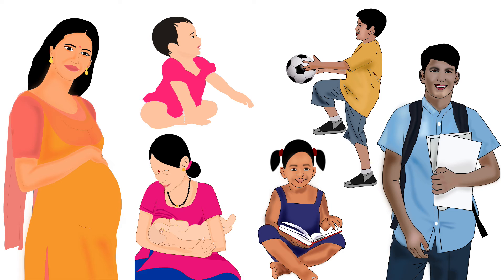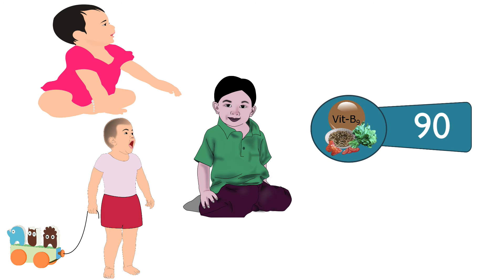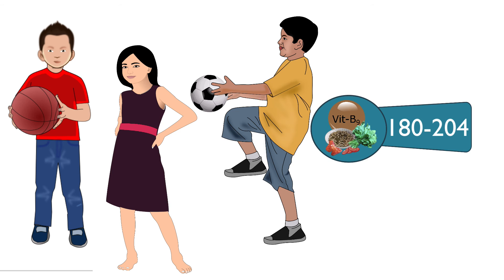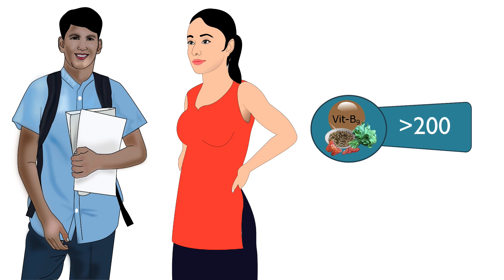Let us look at the per-day recommendations of folate for different age groups. For 1 to 3-year-old children, 90 micrograms is required. For 4 to 9-year-olds, it is 110 to 142 micrograms. For 10 to 15-year-old adolescents, it is 180 to 204 micrograms. More than 200 micrograms per day is recommended for adolescents above 16 years.